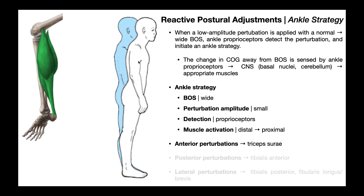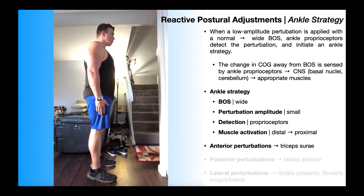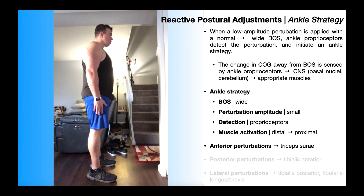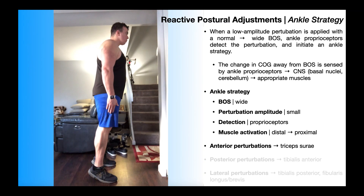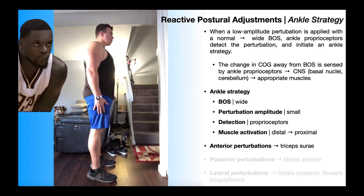In order to get this person back to fully upright erect with the center of gravity directly over the base of support, the best muscles to do that are the triceps surae — gastrocnemius and soleus — because they lie on the posterior aspect and can pull posteriorly back to the original position. So with a wider base of support and small perturbation amplitude, muscle activation is distal to proximal: first the triceps surae, then hamstring activation, then paraspinal activation. The key is that the most distal muscles activate first.